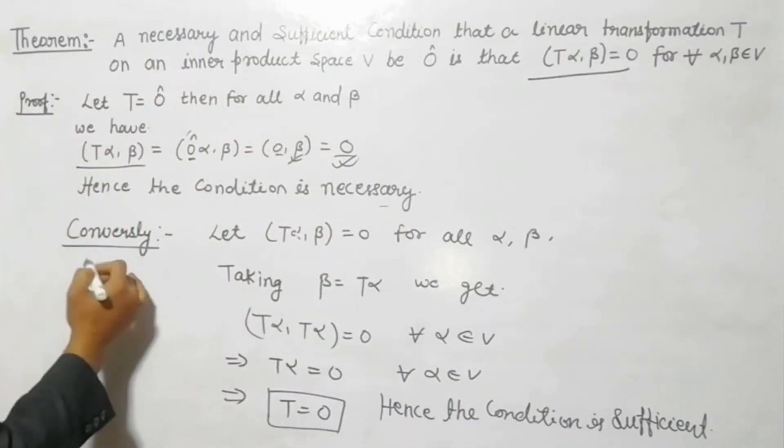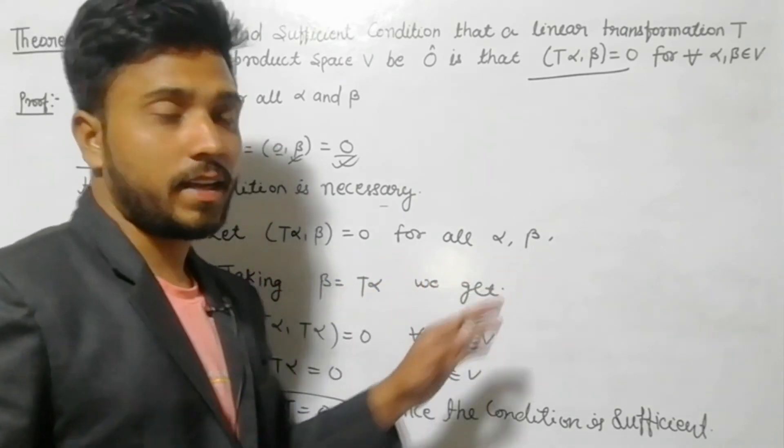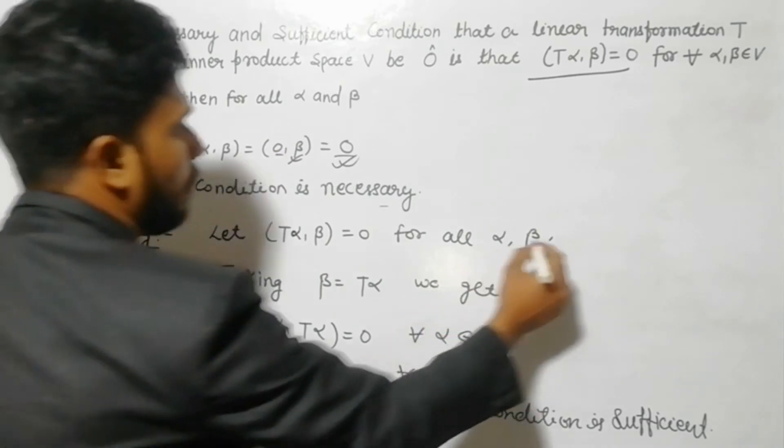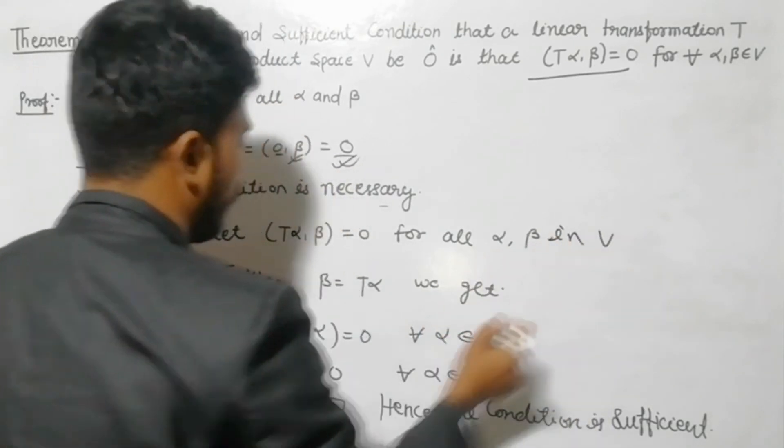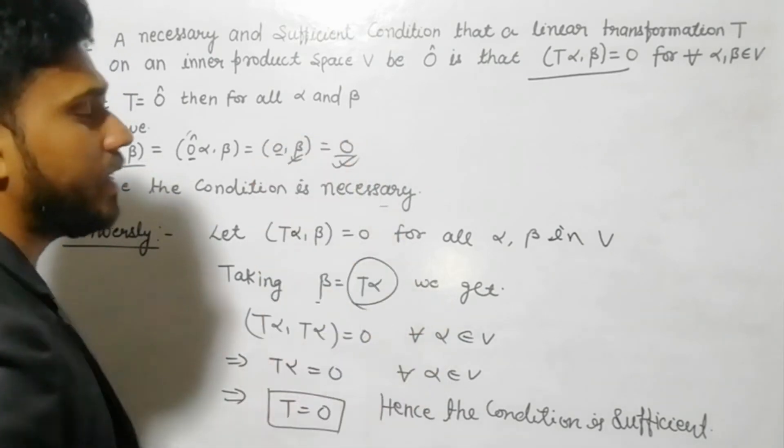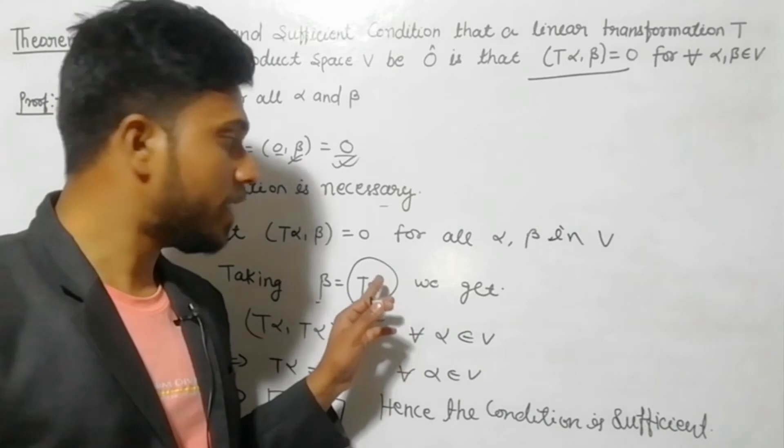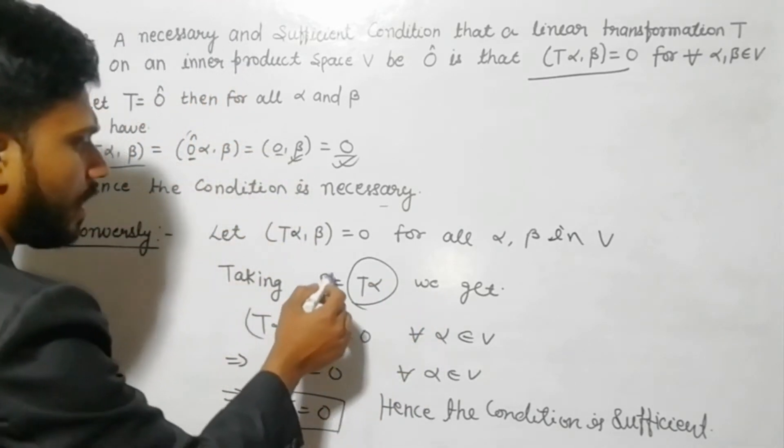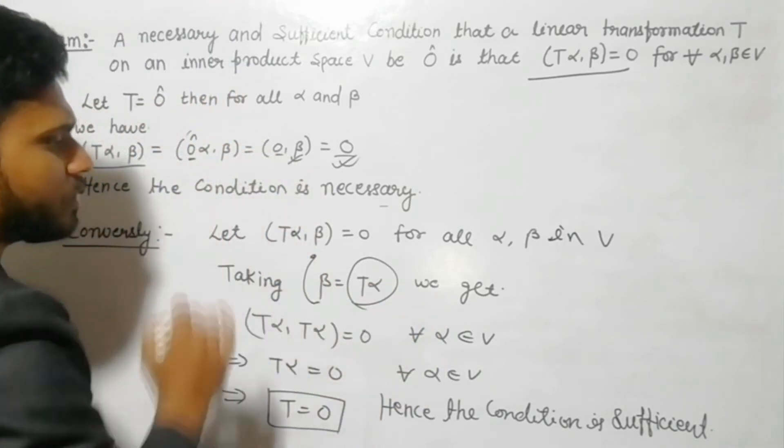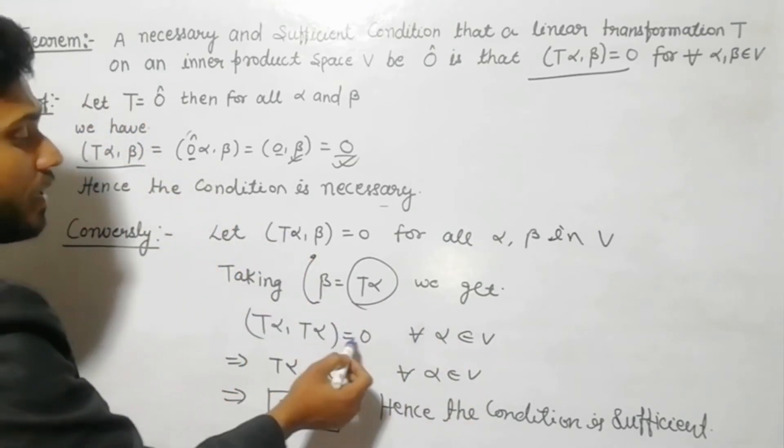Conversely, let (T(α), β) = 0 for all α, β in V. Taking β = T(α), when we take β equal to T(α) and substitute this value in place of β, then we get (T(α), T(α)) = 0 for every α belongs to V.